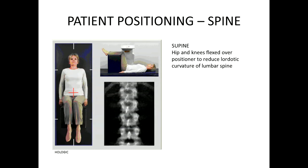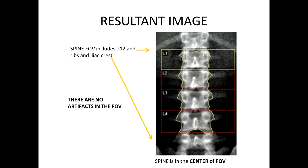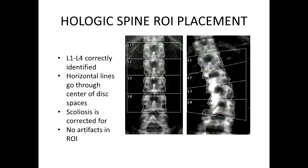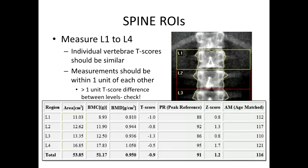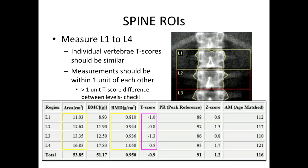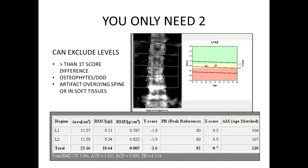Measurements of the spine are obtained with the patient supine with hips and knees flexed over a cushion to straighten the lumbar lordosis. The spine should be centered in the field of view, including the lowest ribs and iliac crest to confidently identify L1 through L4 levels, with no artifacts. L1 through L4 levels must be correctly identified with horizontal lines through the center of each disc space to correct for scoliosis. The area of the vertebral bodies generally increases from L1 through L4, and individual T-scores should be within one T-score of each other. Levels with greater than one T-score difference, or those affected by osteophytes, bone sclerosis, surgery, compression fracture, or artifacts, may be excluded — only two levels are needed for analysis.